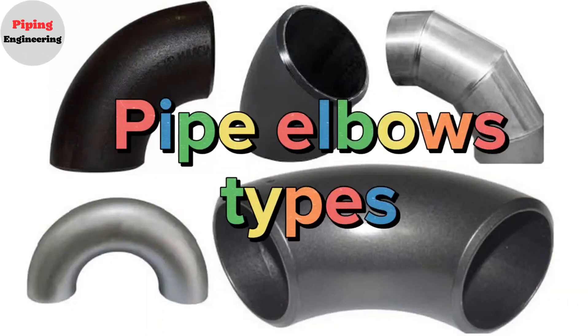Pipe elbows are one of the most important fittings in pipe fabrication. The pipe elbow is a key part in a pressure piping system used to change the fluid flow direction.